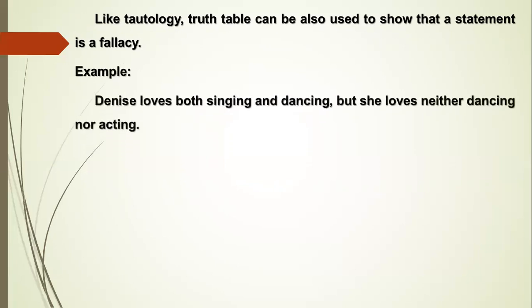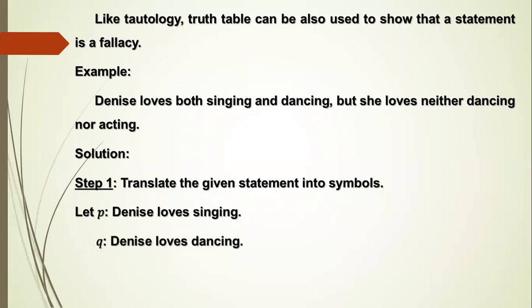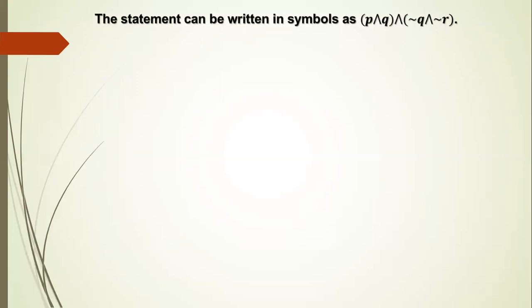Example: Denise loves both singing and dancing, but she loves neither dancing nor acting. Solution. Step 1: Translate the given statement into symbols. Let P: Denise loves singing. Let Q: Denise loves dancing. Let R: Denise loves acting. The statement can be written in symbols as (P ∧ Q) ∧ (¬Q ∧ ¬R).